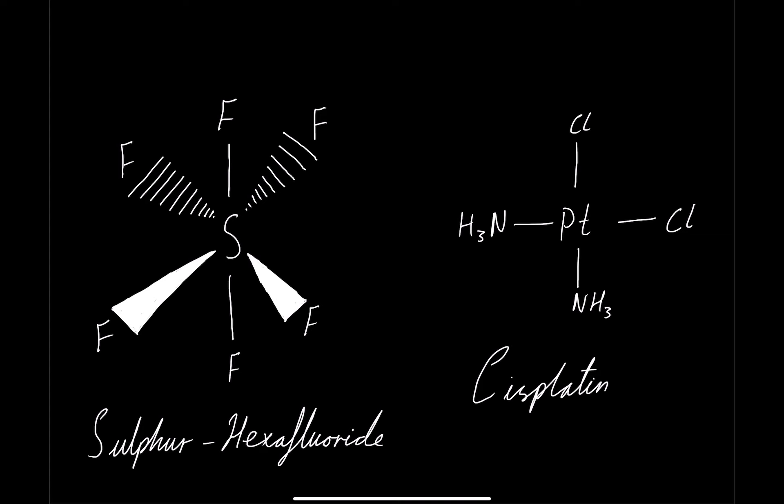How does cisplatin work? It forms coordinate bonds with the bases in DNA. If you know about semi-conservative replication, the DNA splits in half and gets new primers and bases and nucleotides to bind to the other side. What cisplatin does is go in between the DNA strands — so if you have a double-stranded DNA, it goes in between and prevents the DNA from being able to split, by having bonds between the ammonia, the chloride, and the bases.